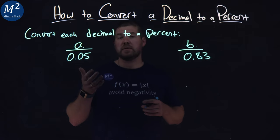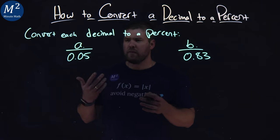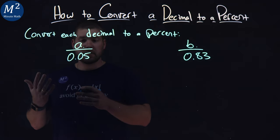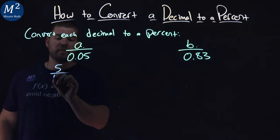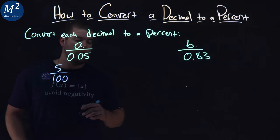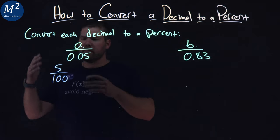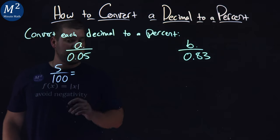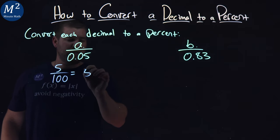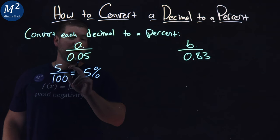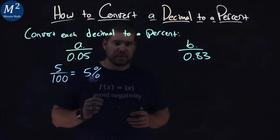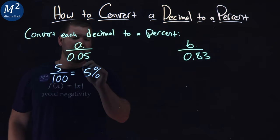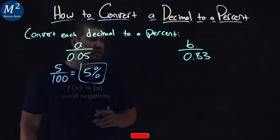First one, 0.05. Well, the first step we want to do is write this as a fraction. 0.05 as a fraction is 5 over 100. From there, what we've seen before, 5 over 100 as a percent is the same thing as 5%. Whatever number we have in the numerator over 100, we can just rewrite the numerator as the percent. So, 0.05 as a percent is just 5%.